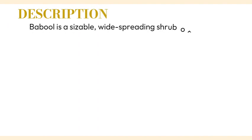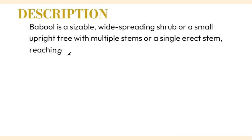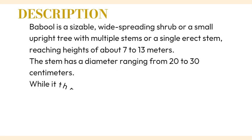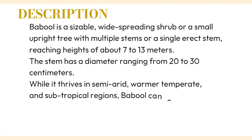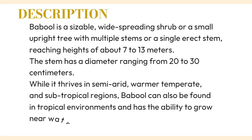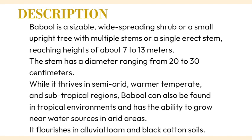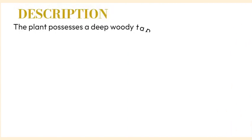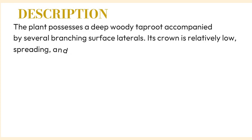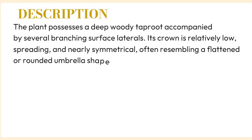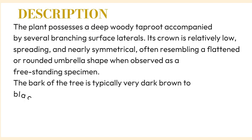Babool is a sizable, wide-spreading shrub or a small upright tree with multiple stems or a single erect stem, reaching heights of about 7 to 13 meters. The stem has a diameter ranging from 20 to 30 centimeters. While it thrives in semi-arid, warmer temperate, and subtropical regions, Babool can also be found in tropical environments and near water sources in arid areas. It flourishes in alluvial loam and black cotton soils. The plant possesses a deep woody taproot with several branching surface laterals, and its crown is relatively low, spreading, and nearly symmetrical, often resembling a flattened or rounded umbrella shape.